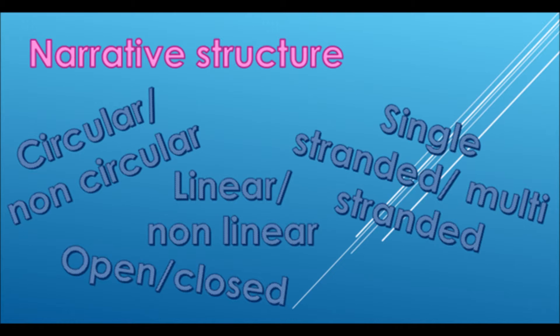If a documentary is linear, this means it is in chronological order. Whereas if it were non-linear, this could include flashbacks and it could go forwards in time, meaning it isn't in chronological order. Lastly, a documentary could be circular or non-circular. Circular is when the documentary has the same ending and start.